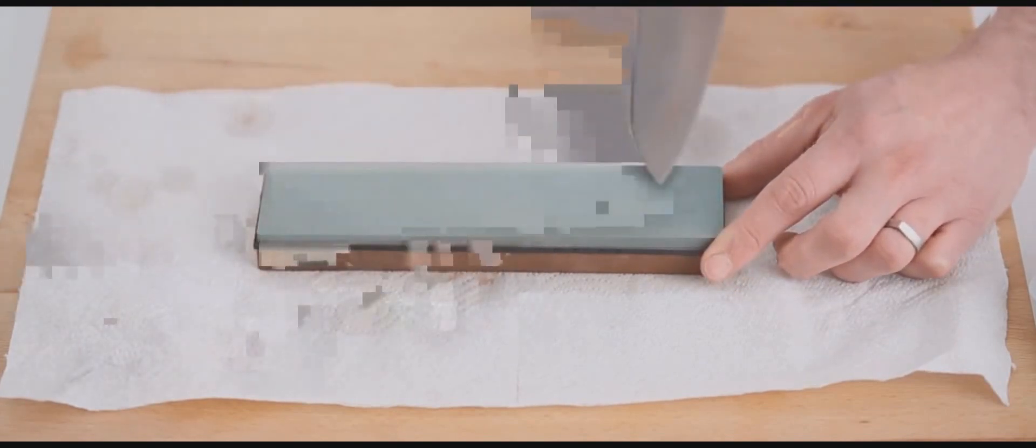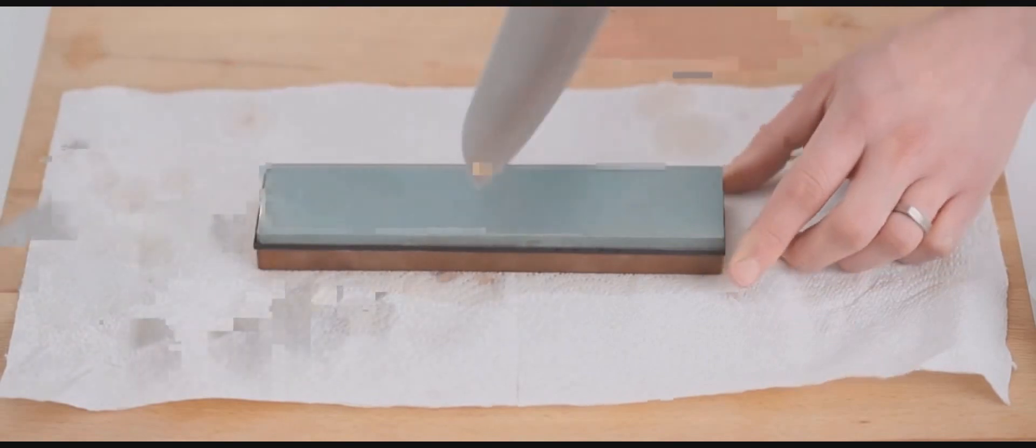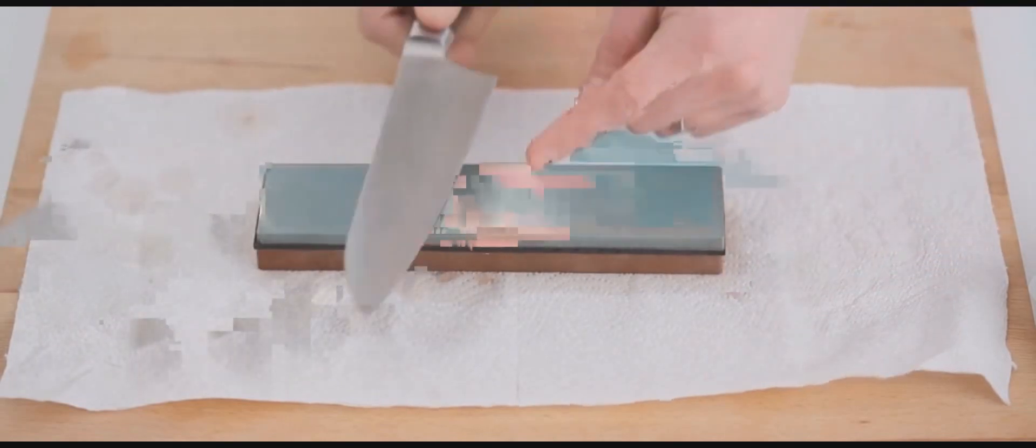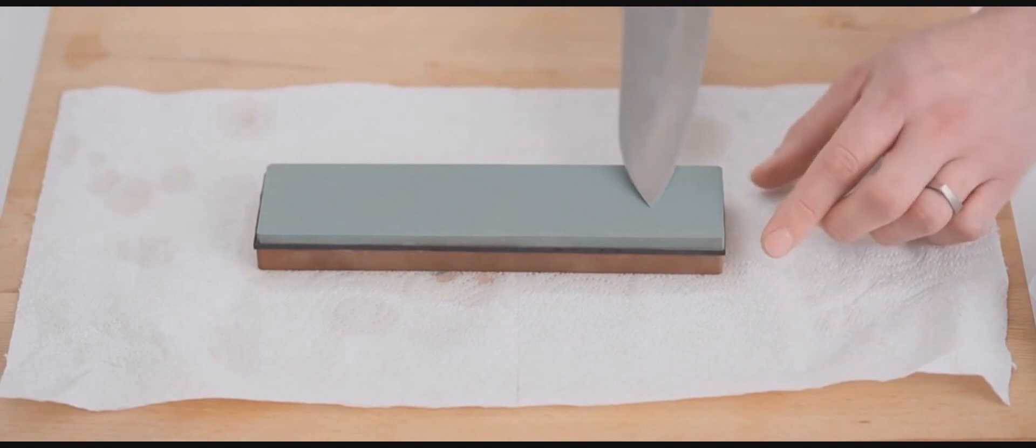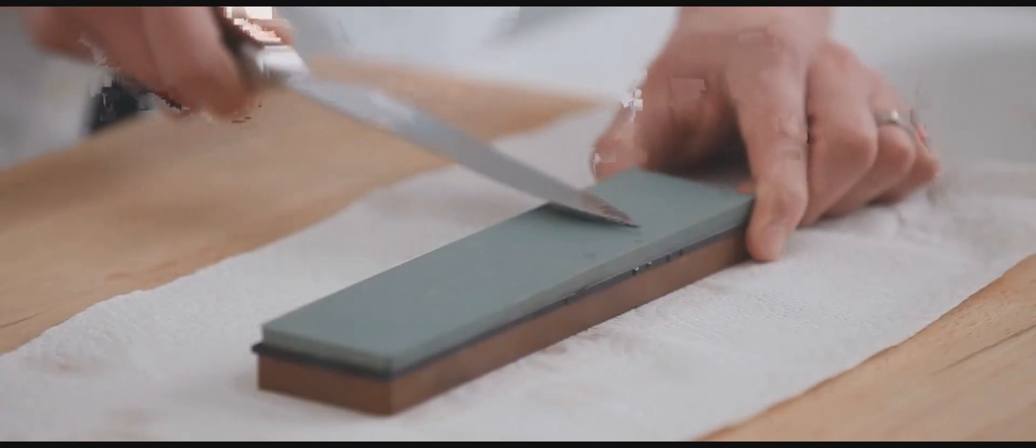So you start moving the knife across the stone. You want to make sure that you are grinding from the tip right to the heel of the knife. So start with the actual point of the knife on the stone and grind across the knife. It takes a bit of practice.